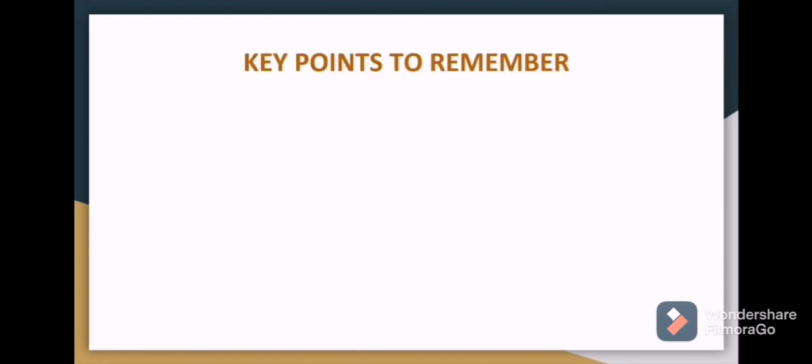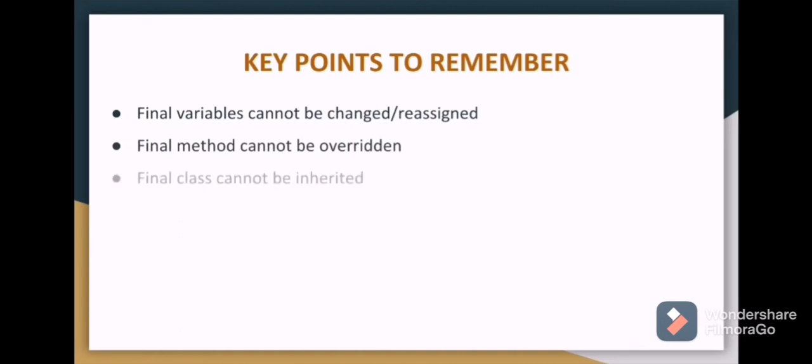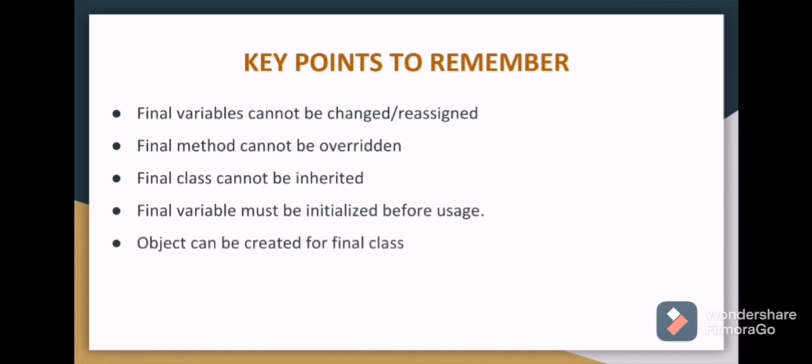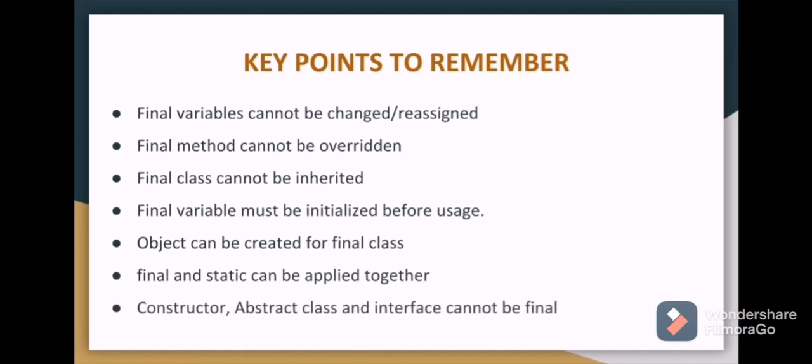To understand all the concepts we have seen so far, let's see the key points to remember. Final variables cannot be changed or reassigned. Final method cannot be overridden. Final class cannot be inherited. Final variable must be initialized before usage. Object can be created for final class. Final and static can be applied together. Constructor, abstract class and interface cannot be final.